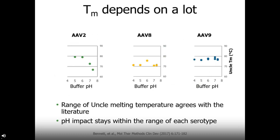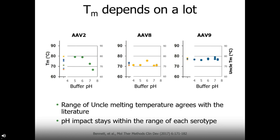Plotting the data for our three serotypes across different buffers, we see the relationship between buffer pH and melting temperature of the capsid proteins. Adding in data from Bennett, we see that pH is a really nice tool that can take AAV stability across the same range of stabilities that Bennett saw in their buffer screen. This can help understand how your AAV might behave once it gets inside cells in a late endosome, whether those proteins start to change their stability behavior, and likewise lets you optimize the buffer for storage to maintain capsid protein stability as long as possible.